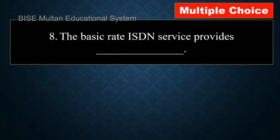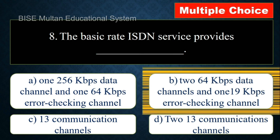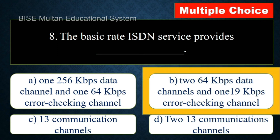Question number 8: The basic rate ISDN service provides. The answer is two 64 Kbps data channels and one 19 Kbps error-checking channel.